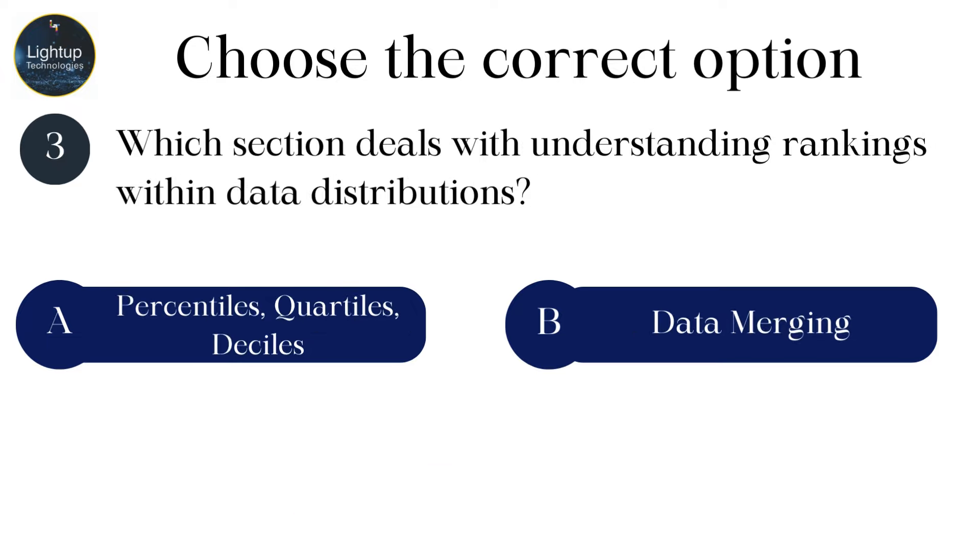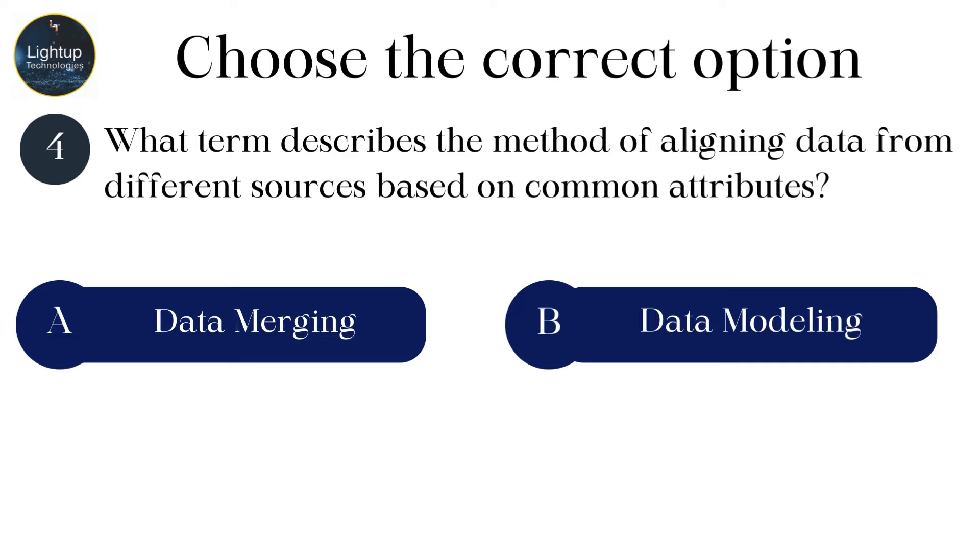Which section deals with understanding rankings within data distributions? What term describes the method of aligning data from different sources based on common attributes?